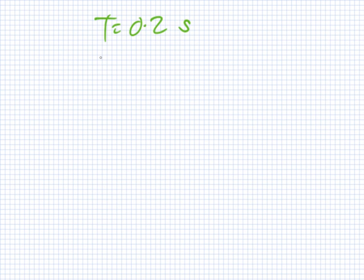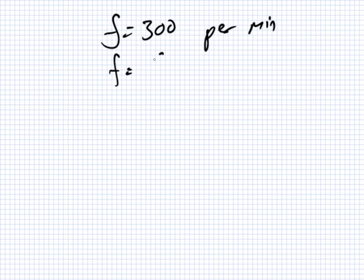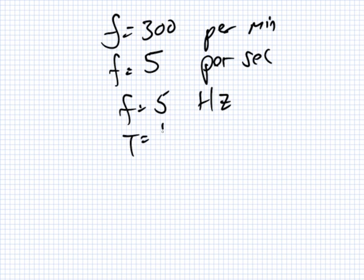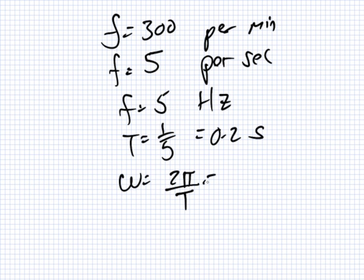The frequency is 300 per minute, so the frequency is five per second, which is five hertz. So the time is one over five, which is 0.2 seconds. And I want omega. Omega is two pi over T.